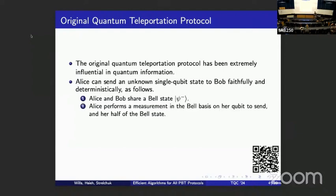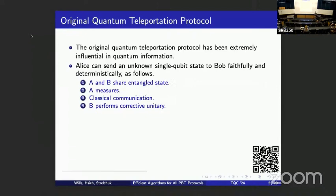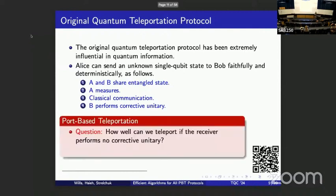Alice has the qubit she wants to send and she performs a joint Bell measurement on her qubit and her half of the Bell state. She then communicates the outcome of that Bell measurement to Bob by some classical channel. Bob receives it and, conditioned on the outcome, does a corrective unitary — in this case a Pauli matrix. We can boil this down to: A and B share entanglement, A does a measurement, they do classical communication, and Bob does a corrective unitary.